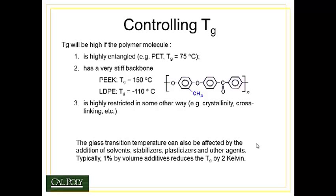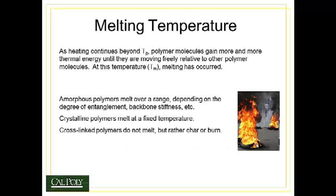Lastly, we could add additional agents to the material such as solvents, stabilizers, plasticizers, rodenticides, colorants, and a number of other chemicals. Typically, about 1% by volume additives reduces the Tg by 2 Kelvin. So when we add these things to the polymer in order to alter their properties, we see a reduction in the Tg, which is often undesirable.